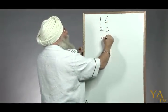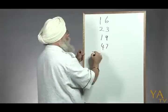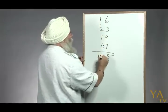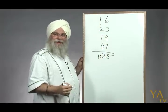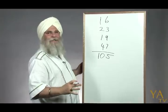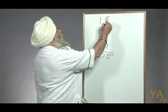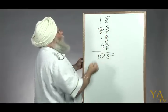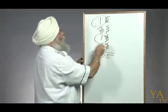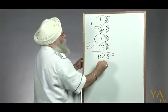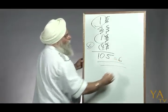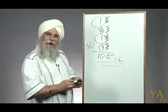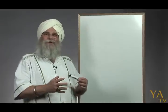Take the numbers 16, 23, 19, and 47. Adding these up gives 105. Now we're going to take away everything that adds up to 9: 6 and 3 add up to 9, take that away; 9 itself; and 7 and 2 add up to 9. That leaves us with 1, 1, and 4, which equals 6. And 1 plus 0 plus 5 also equals 6. That's why it's self-effacing — the 9s disappear and leave you with the basic bottom line.